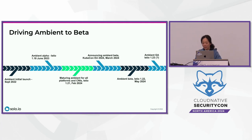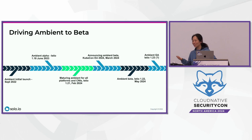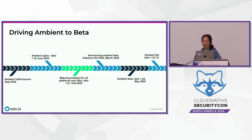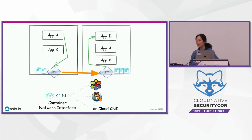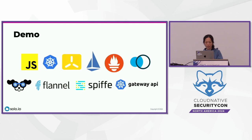Ambient reached beta in May, which is when we started recommending trying it in production. Give us feedback, try it in your test environment — we're hoping to reach GA later this year. Ambient is compatible with all different CNIs. We've tested on Cilium, Calico, EKS, Azure, and Google Cloud.